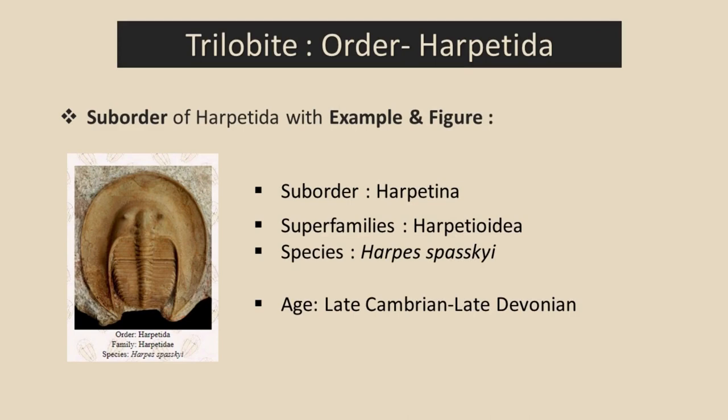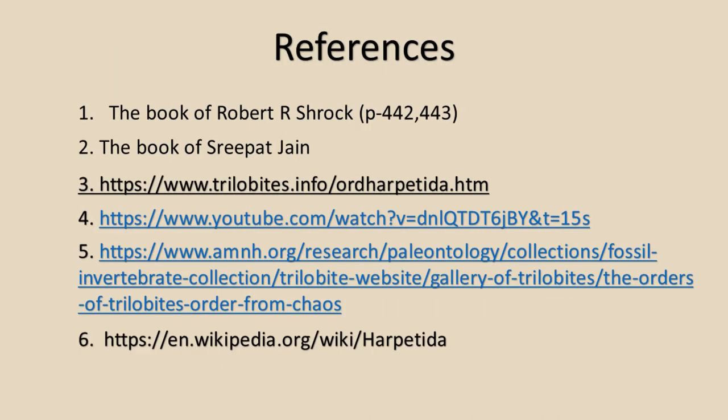Order Harpetida has only one suborder, which is Harpetina, and Harpetoidea is the name of its superfamily. The geological range of Harpetida is Late Cambrian to Late Devonian, meaning it appeared in the Late Cambrian and went extinct in the Late Devonian.